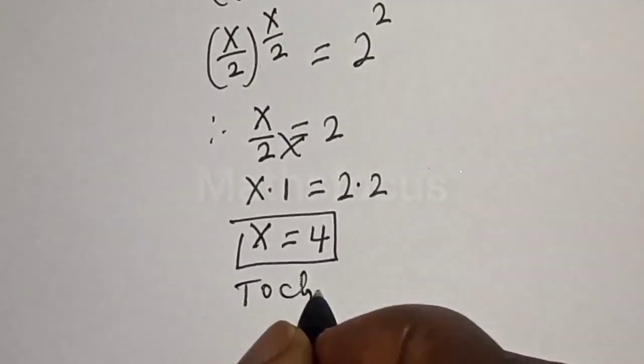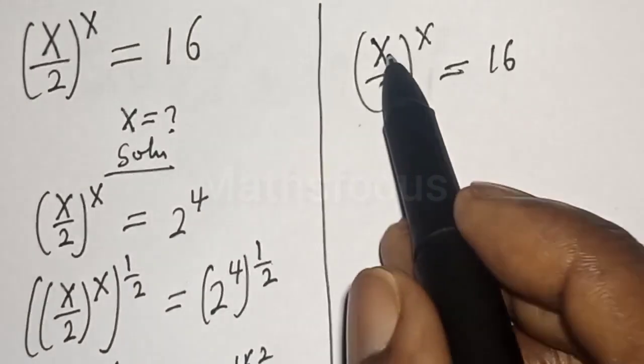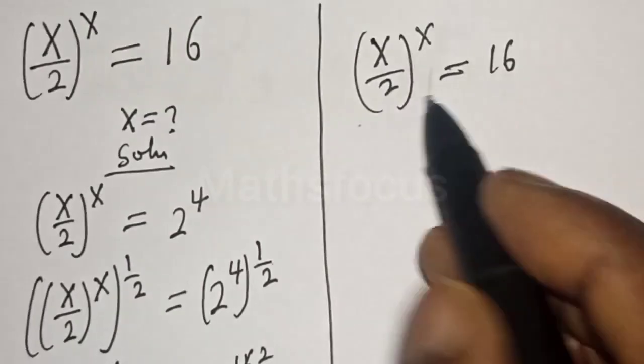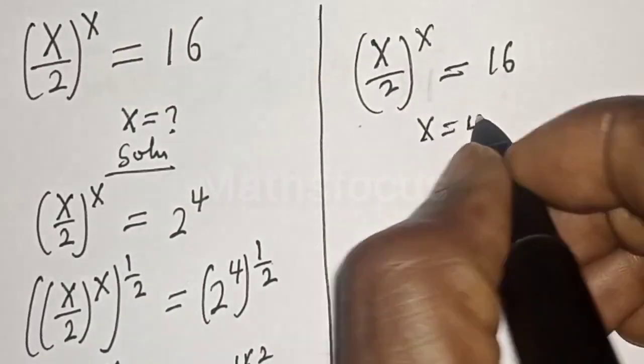To check, we have the given equation: S over 2 to the power of S must equal 16. At S equals what? 4.